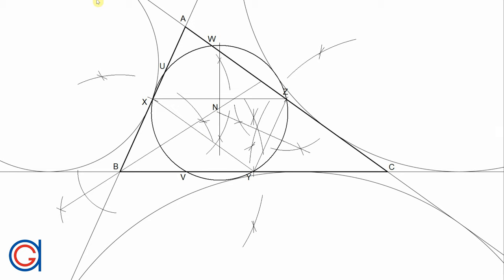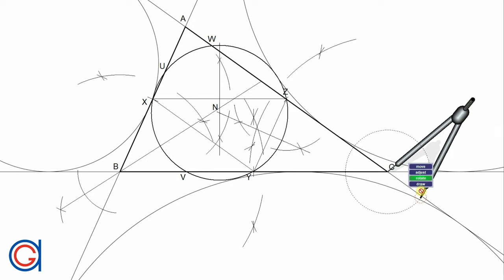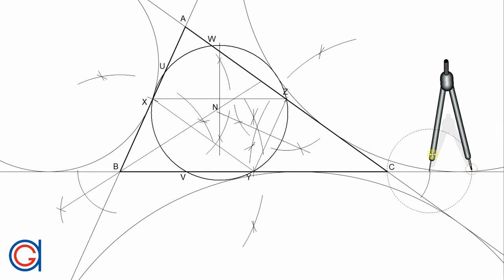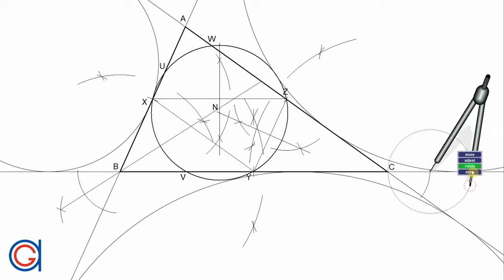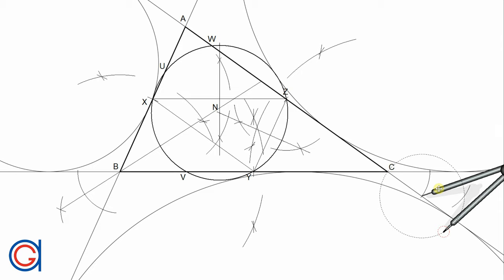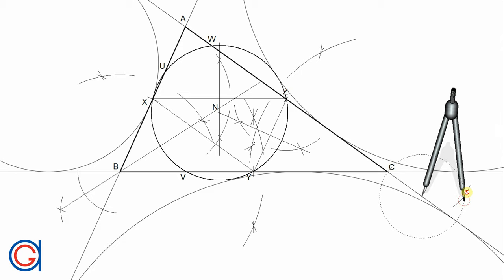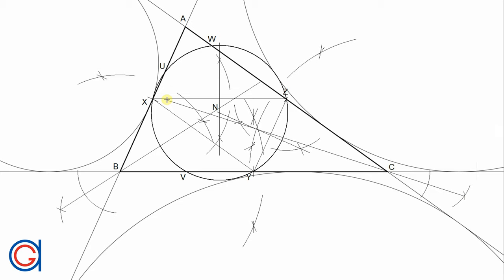Now we are going to repeat this process on vertex C. Setting the compass on vertex C to a random radius, we scribe an arc which cuts the elongation of side BC and side AC at two points. With the same radius, setting our compass on these two new points, we scribe two arcs, and where these arcs intersect, we join it to vertex C and elongate it as before, obtaining the angular bisector. Where these two angular bisectors intersect is going to be the in-center point I, as shown here in the video with a red dot.